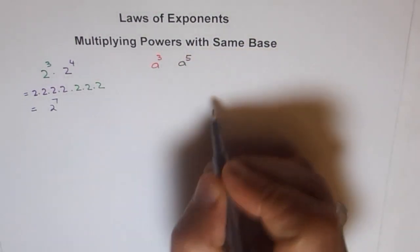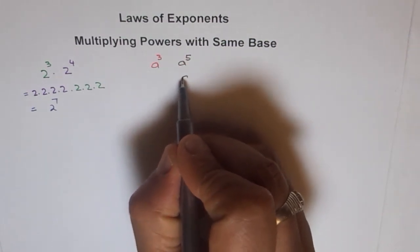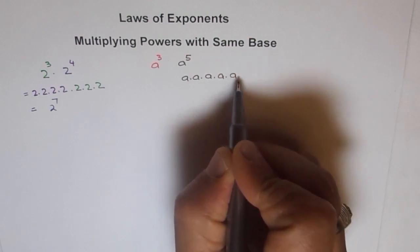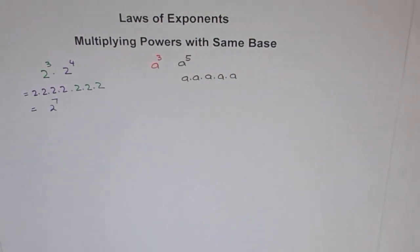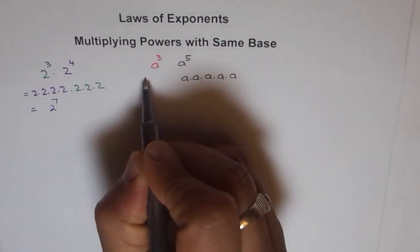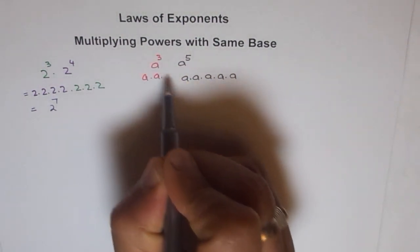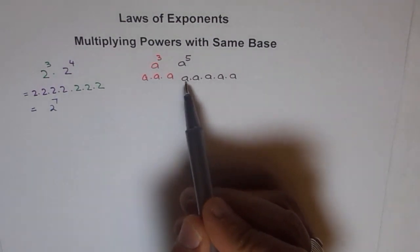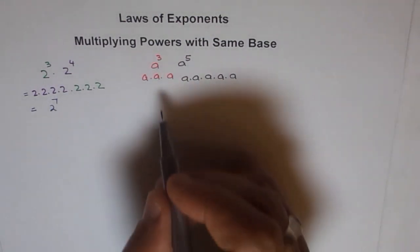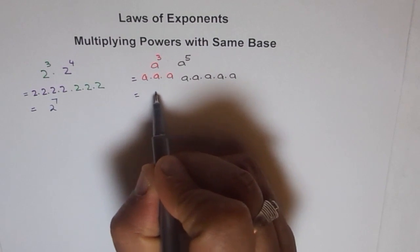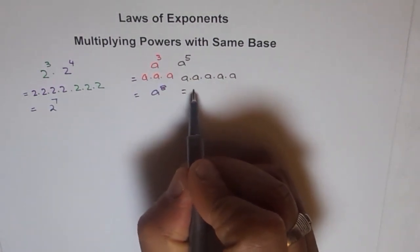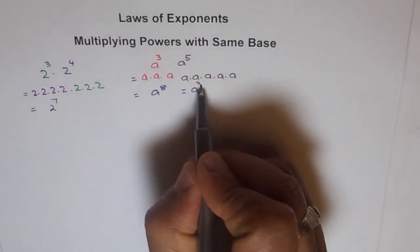A to the power of five means a times a times a times a times a — so we have five a's. And a to the power of three means three a's: a times a times a. In all, how many a's do we have? One, two, three, four, five, six, seven, eight — so this equals a to the power of eight. We get eight by writing three plus five.